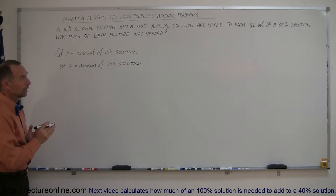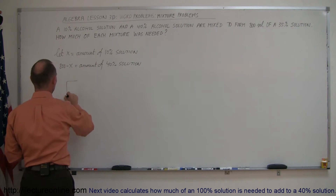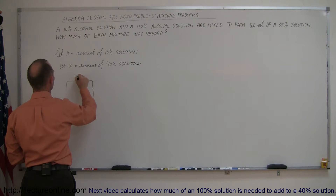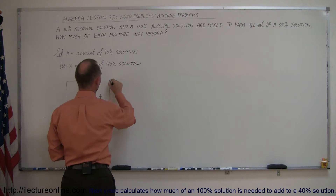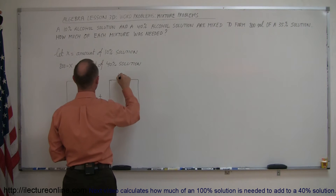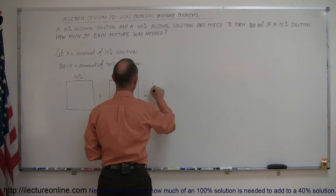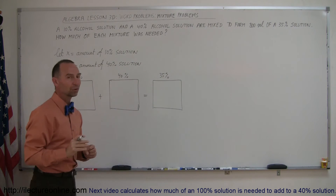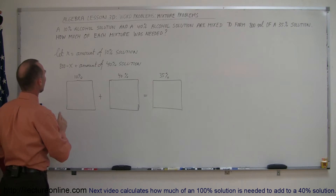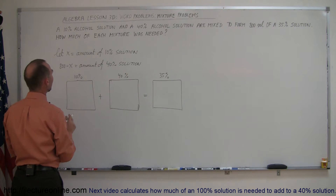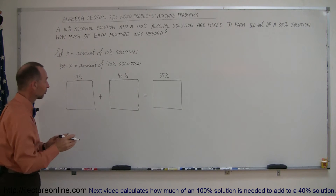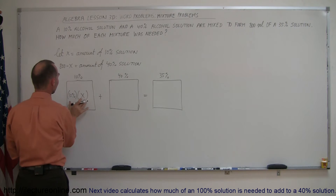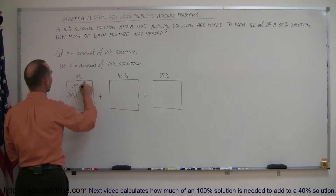The best way to set this up is to draw it out. Let this represent the amount of alcohol that came from the 10% solution — so this is the 10% solution — and this is the amount of alcohol from the 40% solution. That equals the final solution, which is a 35% solution. We're tracking the alcohol in each part.